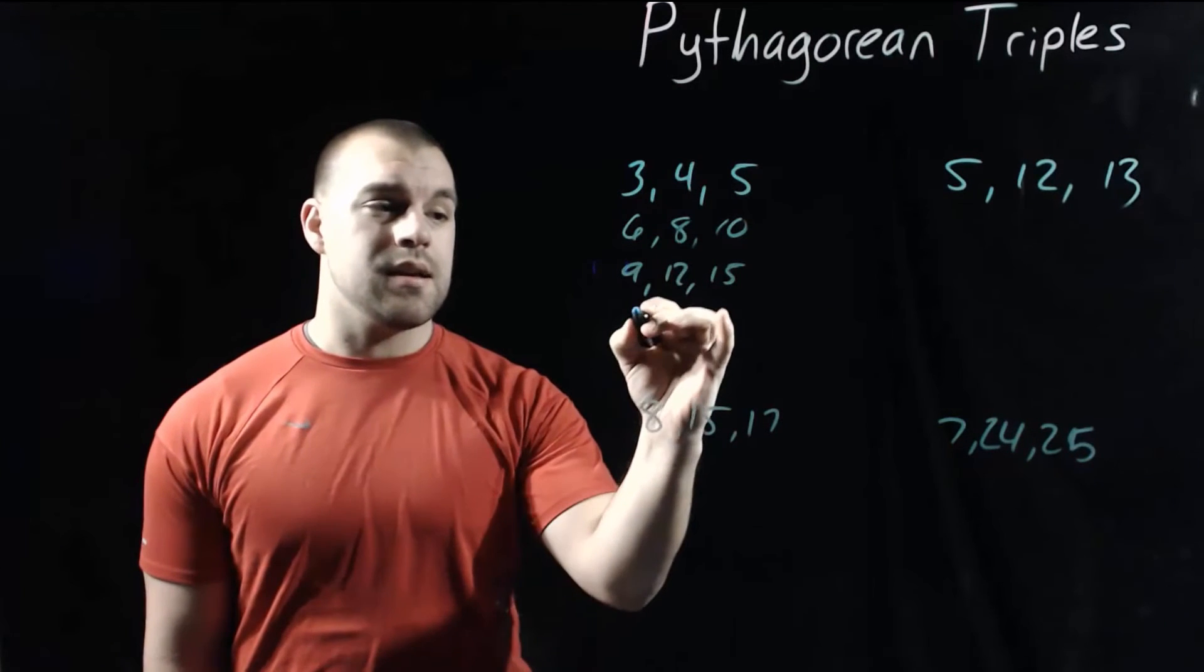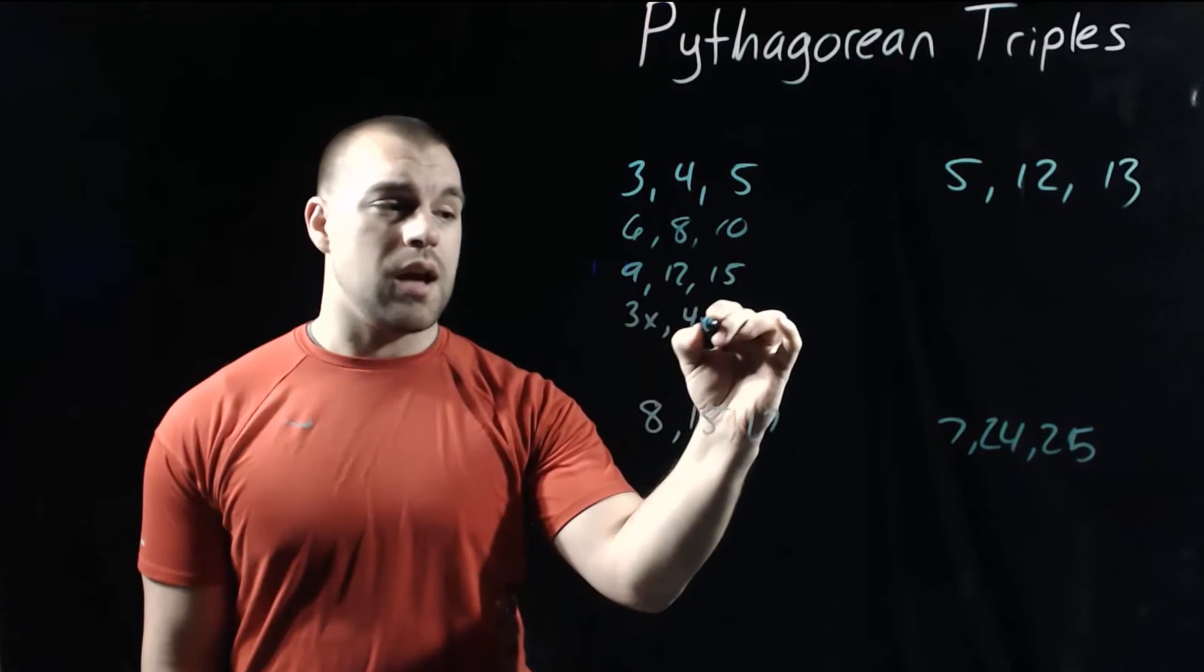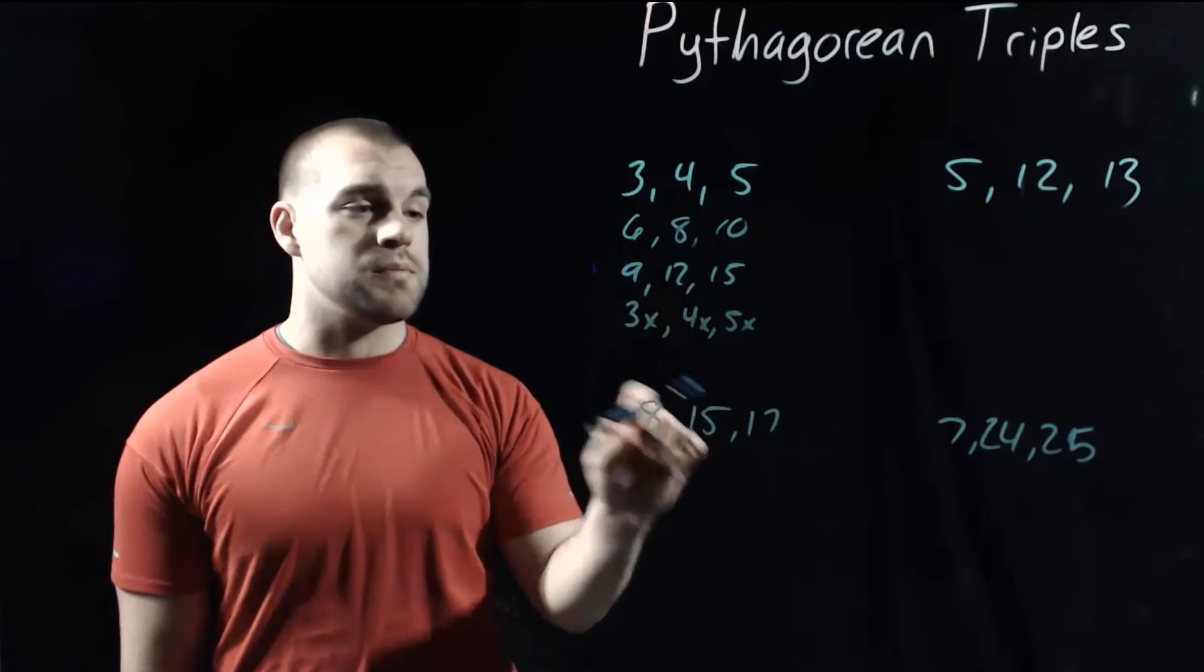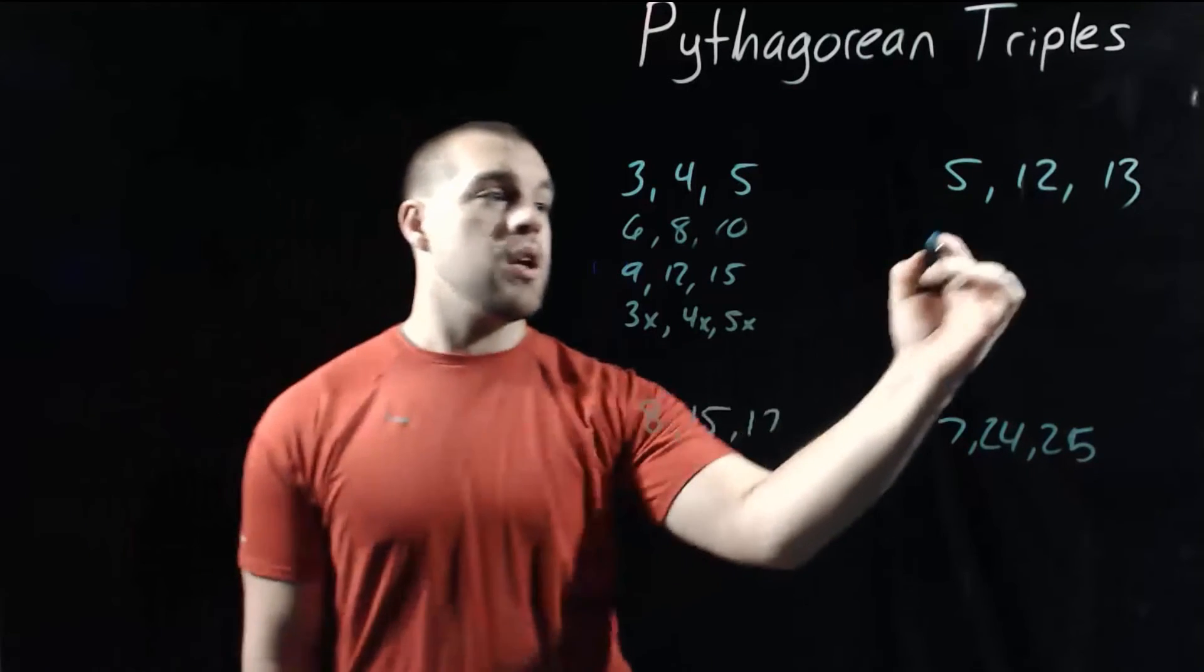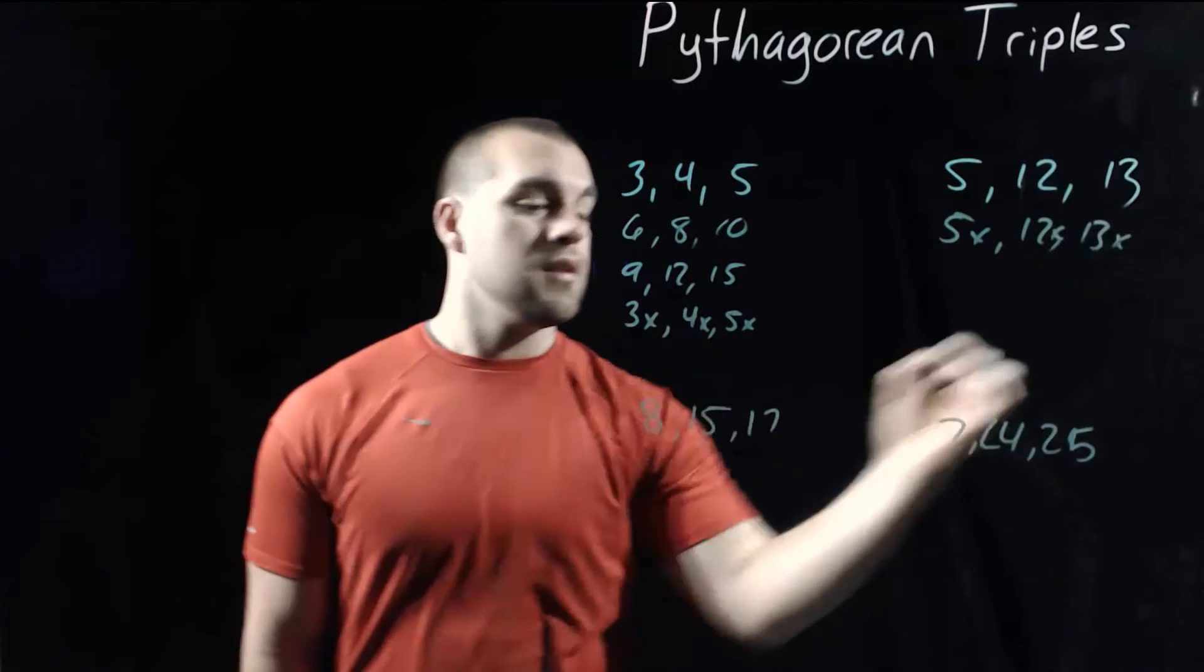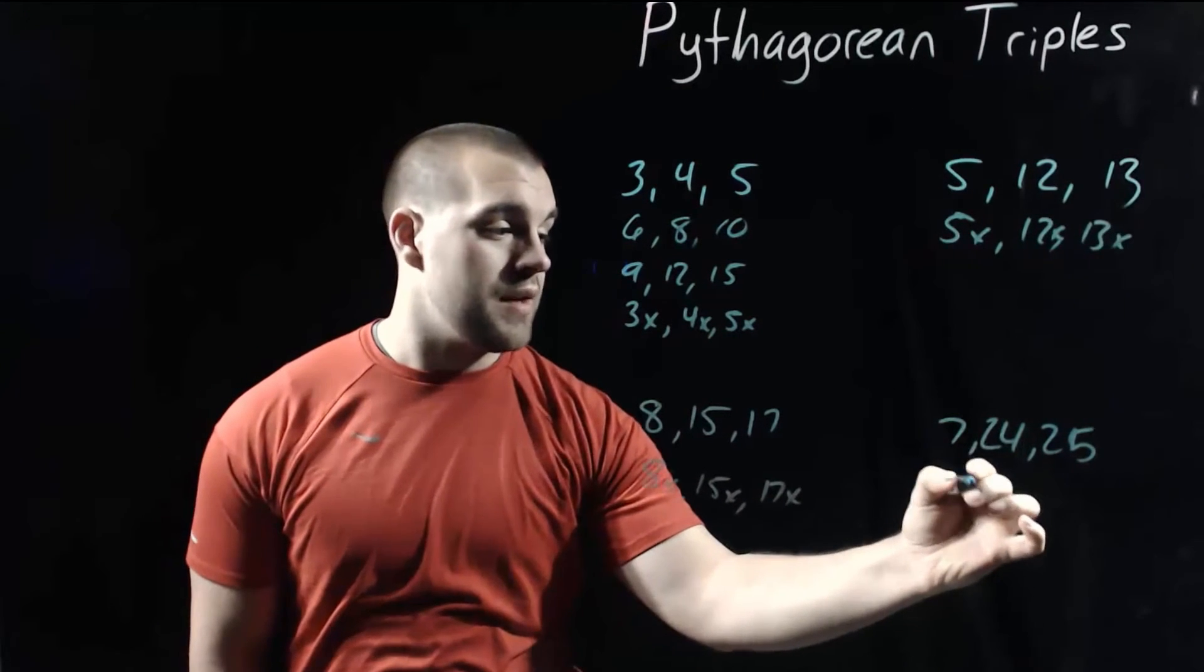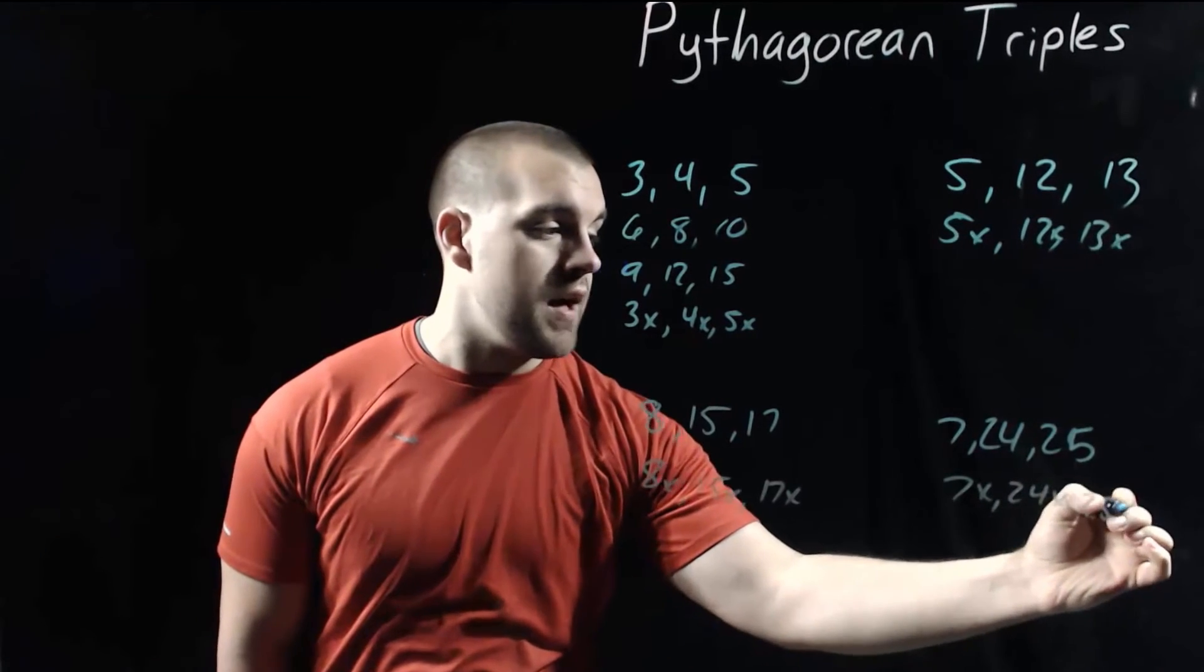So one way that we can look at it is like 3 times a number, so 3x, 4 times a number, 4x, and 5 times a number, 5x. And we can do that with all of these different triples because any double of this triple would also be a Pythagorean triple. So over here we can have 5x, 12x, and 13x. Down here we could have 8x, 15x, and 17x. And with this one we could have 7x, 24x, and 25x.